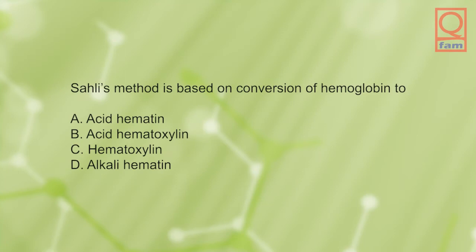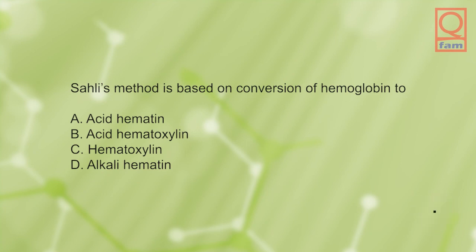Sahli's method is based on conversion of hemoglobin to: A) acid hematin, B) acid hematoxalin, C) hematoxalin, D) alkali hematin. The answer is A, acid hematin.